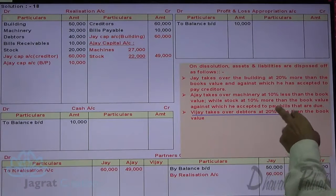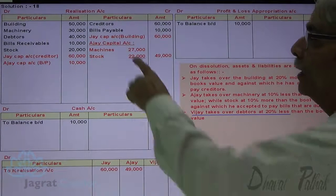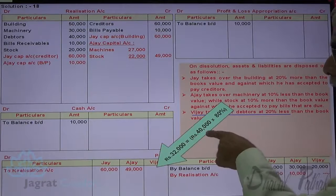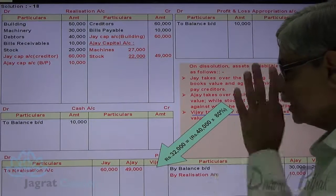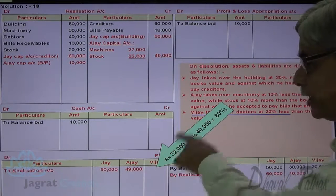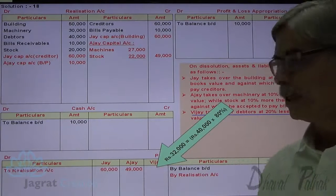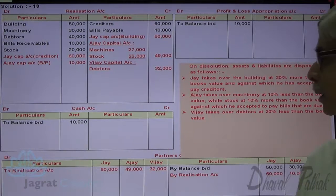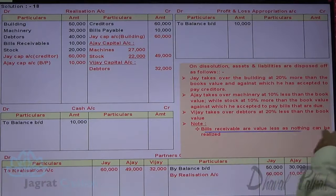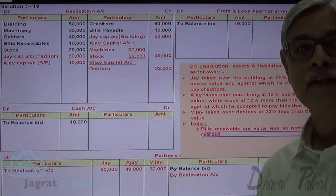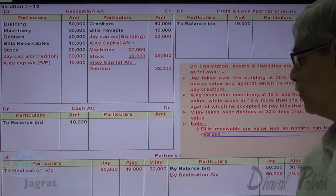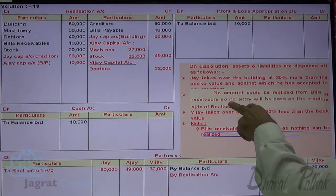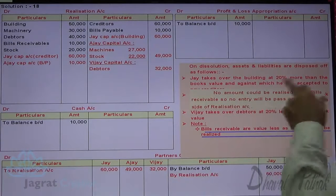Vijay takes over debtors at 20% less than book value: 80% of 40,000 = 32,000. Vijay is the receiver — entry: Vijay's capital account debit to realization account credit 32,000. Bills receivable are valueless; nothing could be realized, so no entry will be passed on the credit side of the realization account.